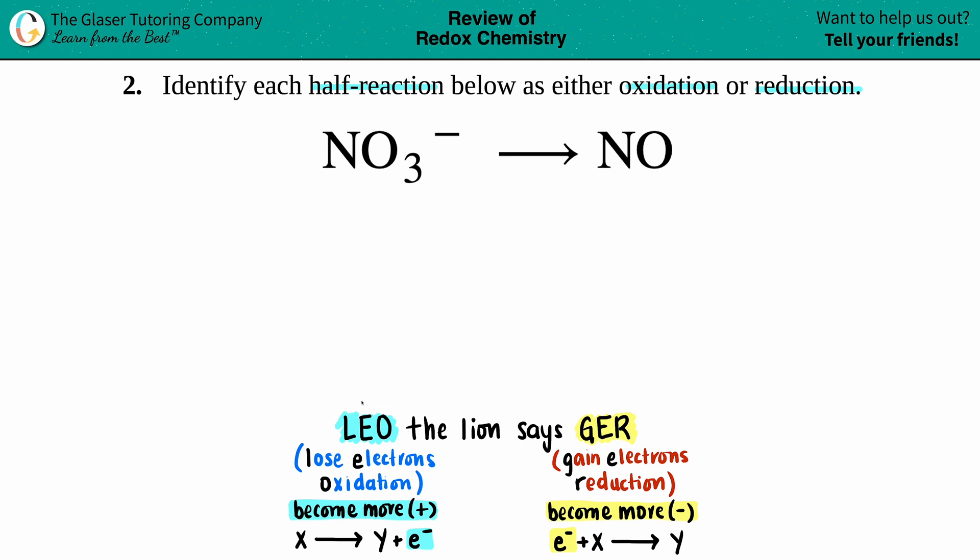LEO is when you lose electrons, you're always becoming oxidized or undergoing oxidation. So lose electrons equals oxidation. That just means you're becoming more positive from left to right of the equation. The GER side is the opposite: gain of electrons is always reduction.